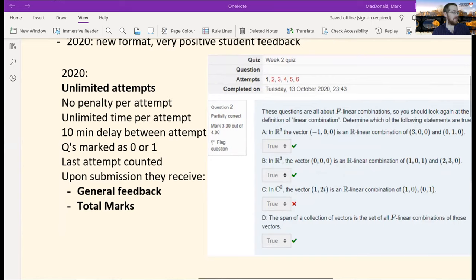So at the end of each attempt, when they submit all 20 questions together, they get their marks, they get the mark out of three, but they don't get these checkmarks and X's. So they don't know individually which one is correct, but they do get this three out of four mark.